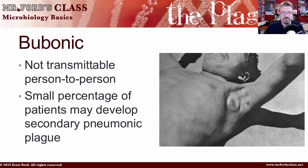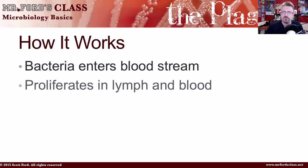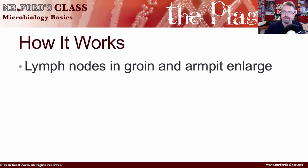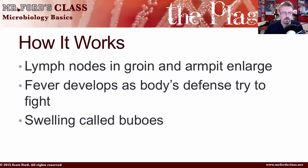A small percentage of patients may develop secondary pneumonic plague — think pneumonia, in the lungs. The bacteria enter the bloodstream, proliferate, and party in the lymph and blood. It's able to survive and thrive within phagocytic cells. The lymph nodes in the groin and armpit enlarge. Fever develops as the body's defenses try to fight, and you get the characteristic swelling of the bubonic plague.